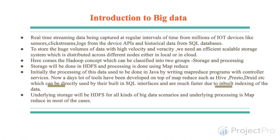As the name suggests, big data is a huge volume of data which is either at rest or in motion. Data at rest means data which is already being stored in transactional database systems from many years — it's a kind of historical data. Data in motion is nothing but real-time streaming data being captured at regular intervals from millions of IoT devices, clickstreams, logs, and many other data sources.